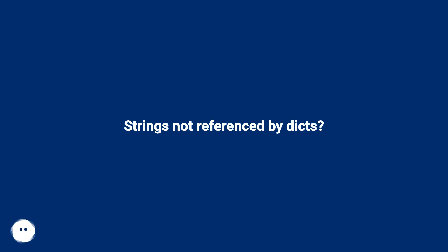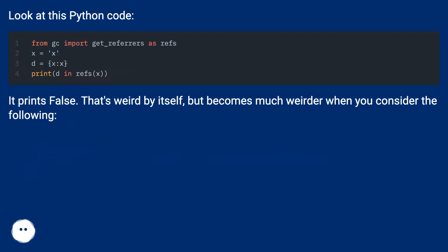Strings not referenced by gc? Look at this Python code. It prints false. That's weird by itself, but becomes much weirder when you consider the following.